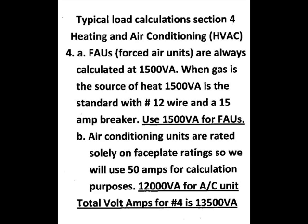The next thing we come up to is FAUs, or forced air units, which are always calculated at 1,500 volt amps when gas is the source of the heat. Air conditioning units are rated solely on faceplate ratings, so we'll just use 50 amps for calculation purposes — that's 12,000 volt amps for the AC unit. For the HVAC, which is the heating and air conditioning forced air unit, the whole package, we come up with 13,500 volt amps.